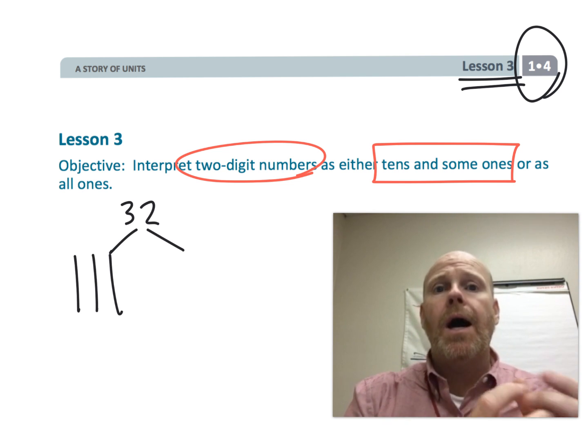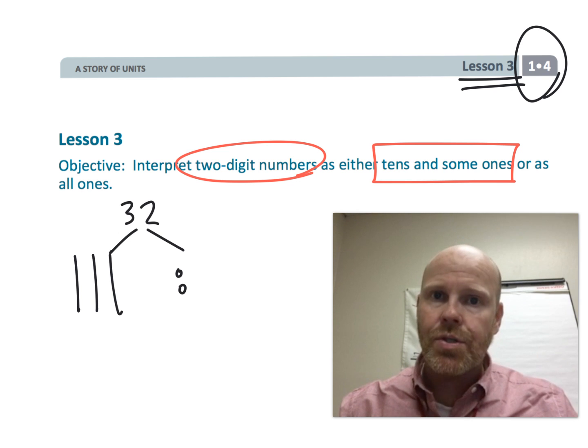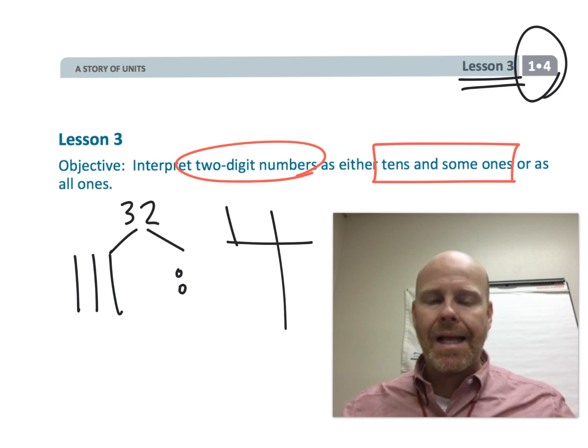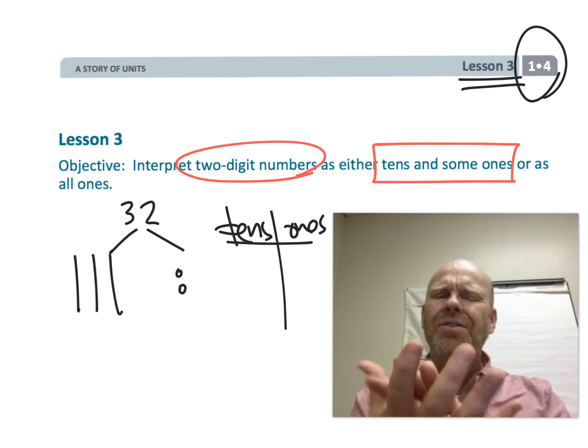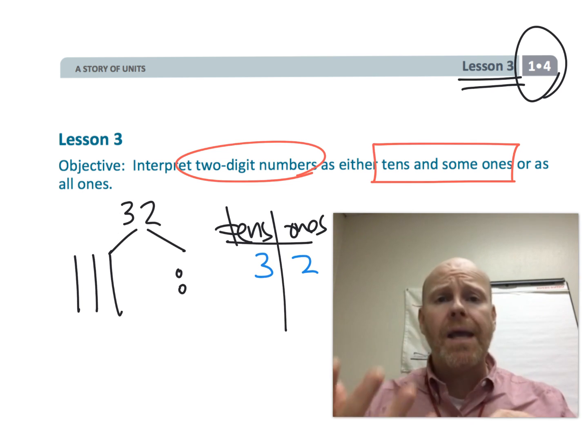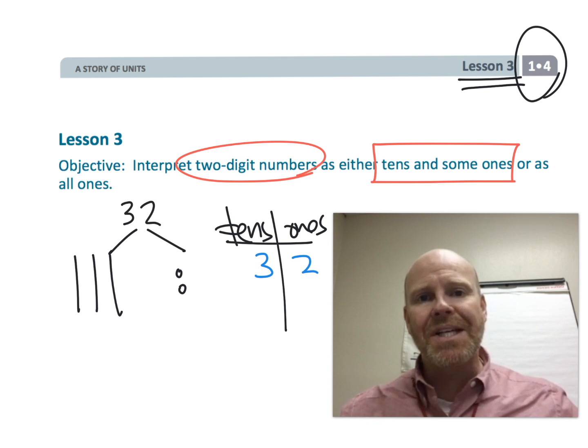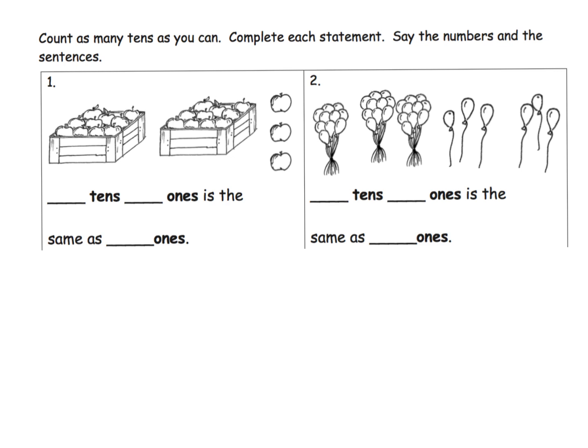They're going to continue thinking about it inside a place value chart. We're just allowing our students to experience these numbers and understand these two-digit numbers in a variety of different ways. So let's get started.